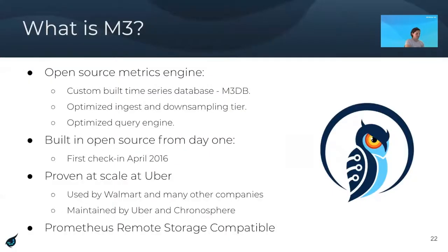So monitoring with Prometheus and M3. M3 is an open source metrics engine comprised of three main components: a custom-built time series database called M3DB used to efficiently store all metrics data; an ingest and downsampling tier; and a query tier used to provide optimized queries and fetches for all the data. M3 was built open source from day one, with its first check-in on GitHub around April 2016. It was originally built to solve the metrics and monitoring use cases at Uber, and has since helped many other companies such as Walmart. It is designed to be Prometheus remote storage compatible.